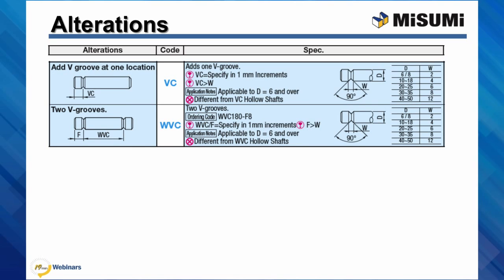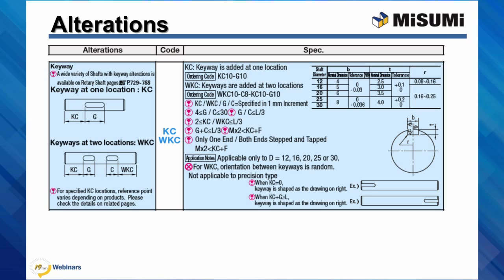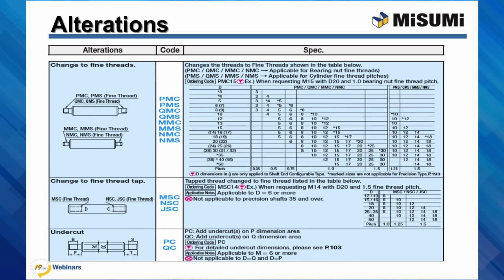Adding one or two V-grooves to a shaft — you can specify the location of the V-grooves. V-grooves can be used for de-collers or collars with holes for proper orientation. Adding one or two keyways to a shaft — you can specify the size and location of the keyways. Keyways can be used for oscillating motion applications to help maintain proper orientation. Changing the thread pitch for both external and internal threads — the standard thread pitch is always coarse for Misumi shafts, and this alteration allows you to select a finer thread pitch when necessary.